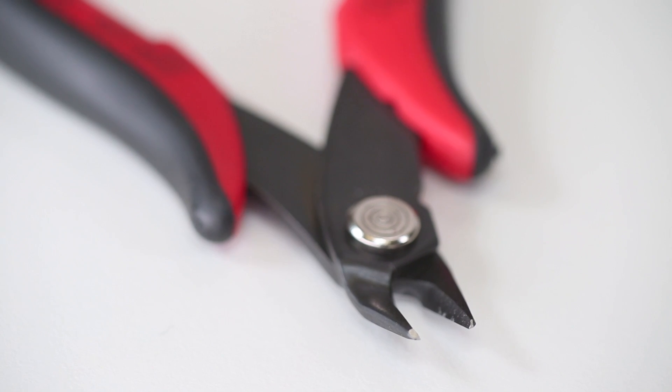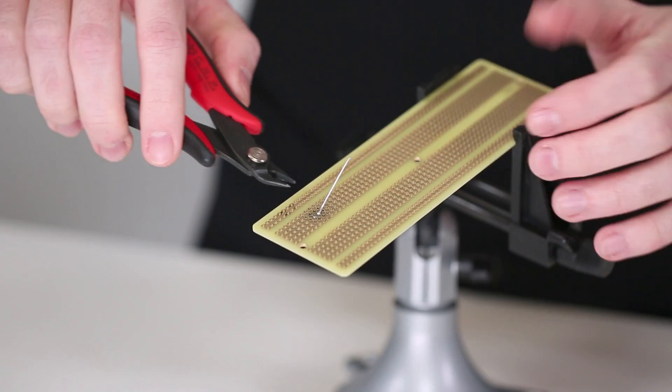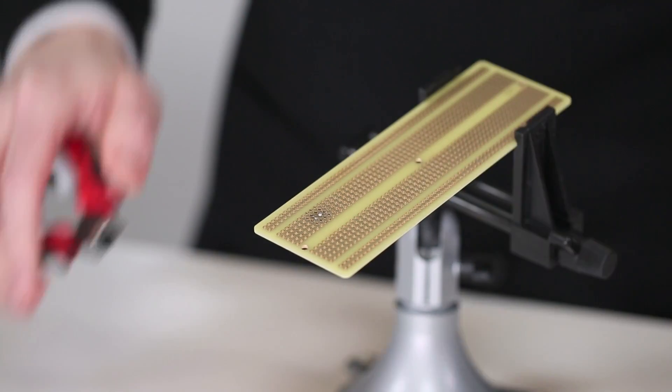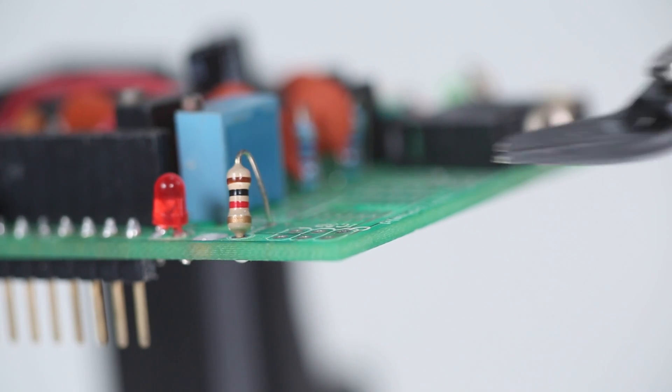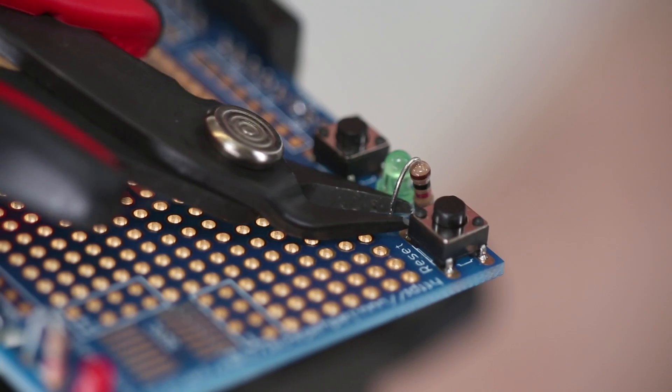This particular pair are referred to as flush diagonal cutters. Flush because they allow you to cut leads as close to the board as possible, and diagonal because the blades are angled, allowing you to reach into some tight spots.